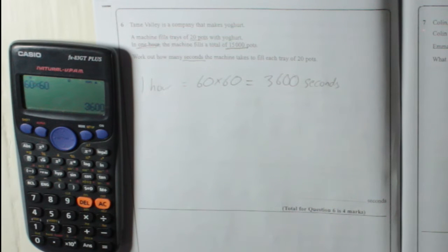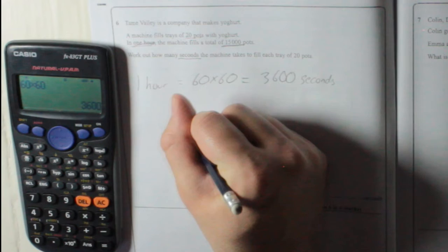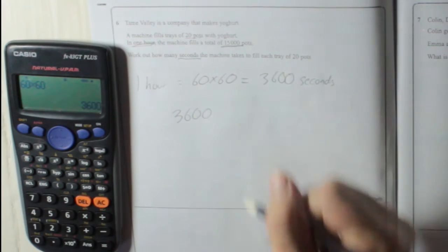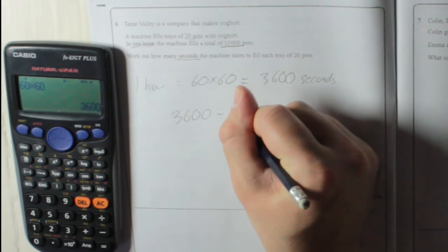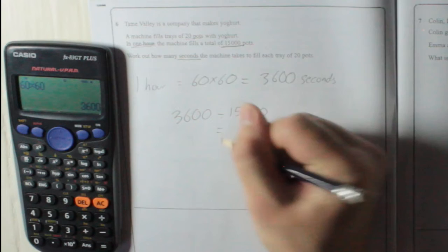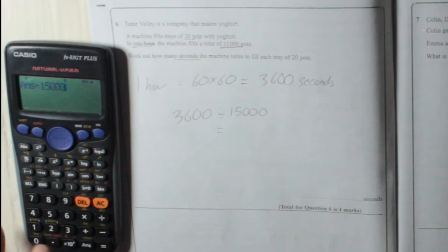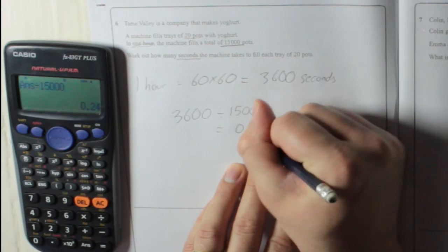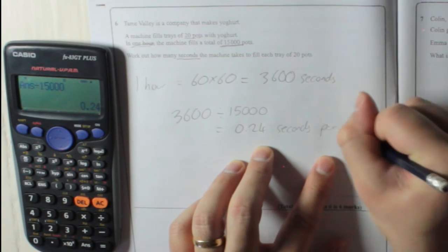It takes 3,600 seconds to fill 15,000 pots. If we take 3,600 seconds and divide it by 15,000, we'll get how long it takes to fill one pot, which is 0.24 seconds per pot.